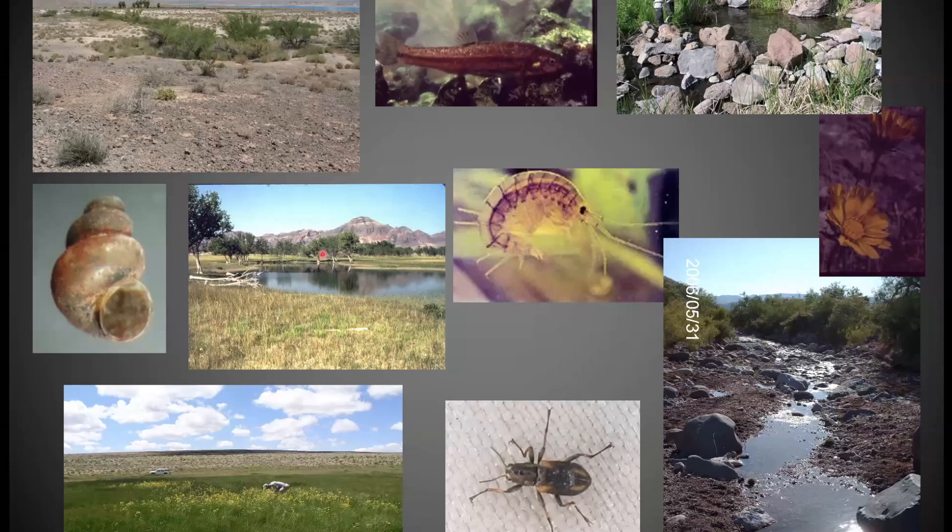You don't have any invasives in Travertine Springs in Death Valley National Park. You've got five endemics there — it's too small for fish — and they don't have any invasive fish, snails, or anything else.